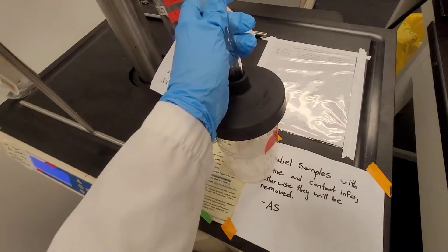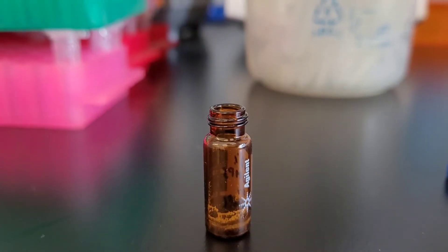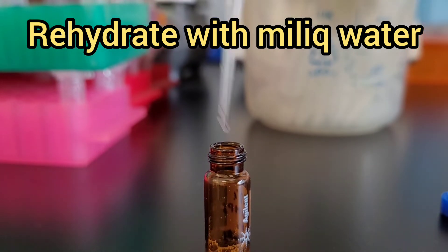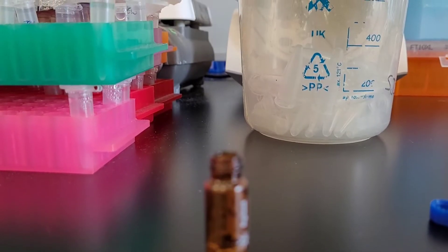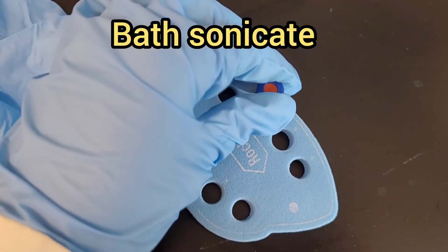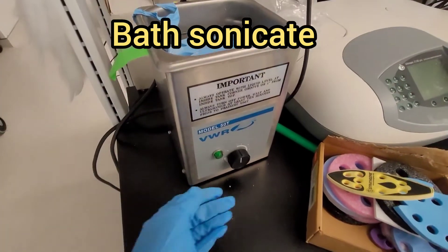The next day you can take off the vial from the lyophilizer. It should be completely dry, and then the next step is to rehydrate the lipids. So you just want to add water. It doesn't really matter what the volume is because it will get evaporated, but add enough water so it will dissolve the lipids.